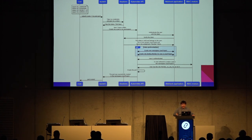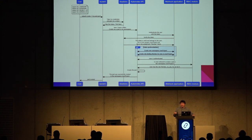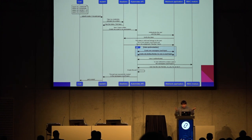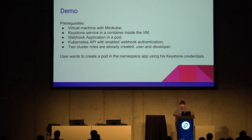Next step for the API is to authorize the user — it asks the RBAC module whether the user has rights to create a new pod. By this time, the namespace and role bindings are there. RBAC, using its own logic, validates that the user has rights to create a pod and says yes to the Kubernetes API. Then Kubernetes creates a new pod and returns information about it to the user. It seems easy — there is no magic here, but it works.